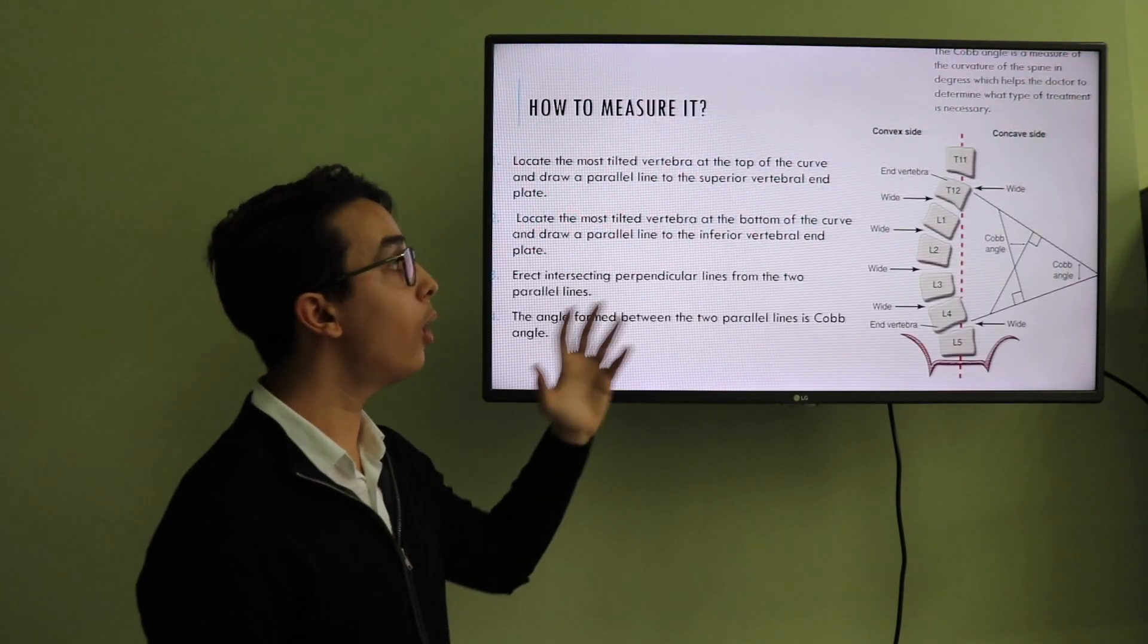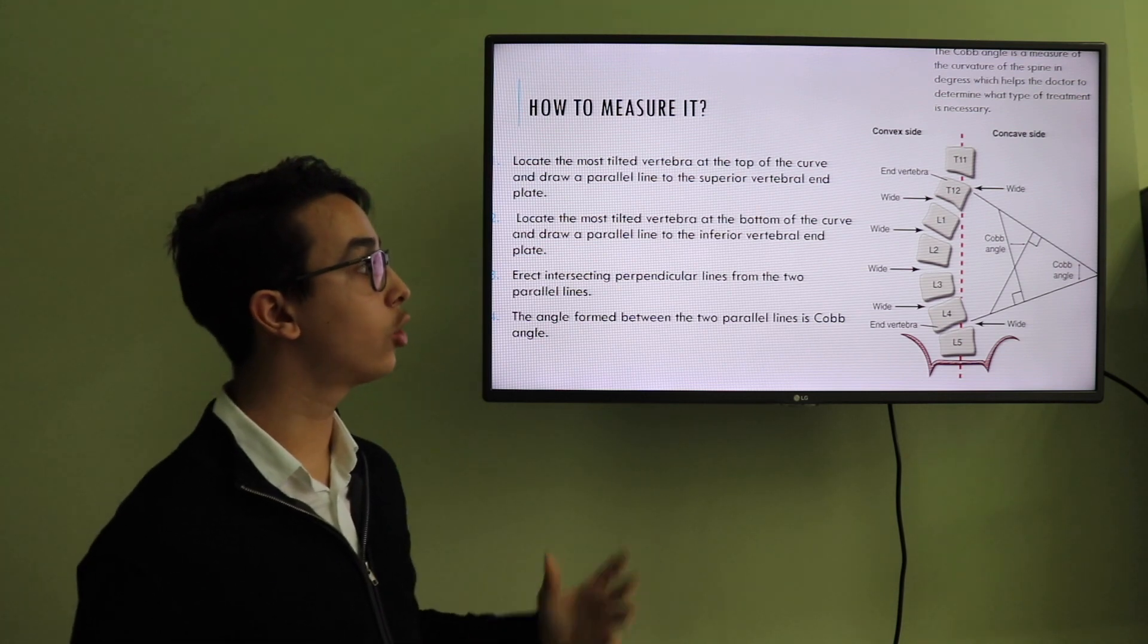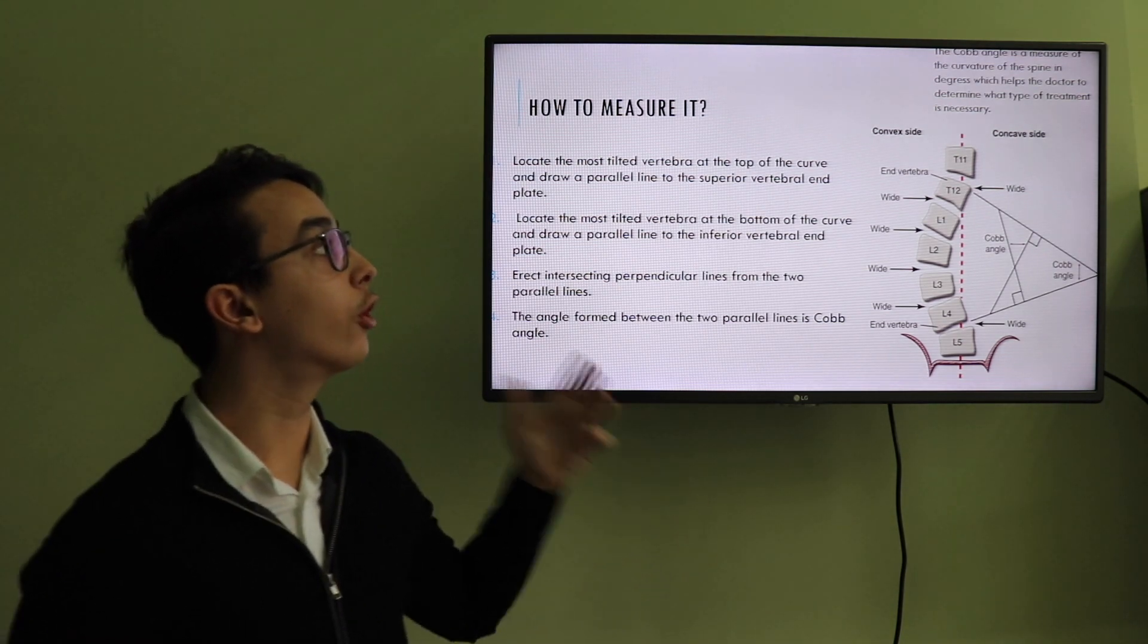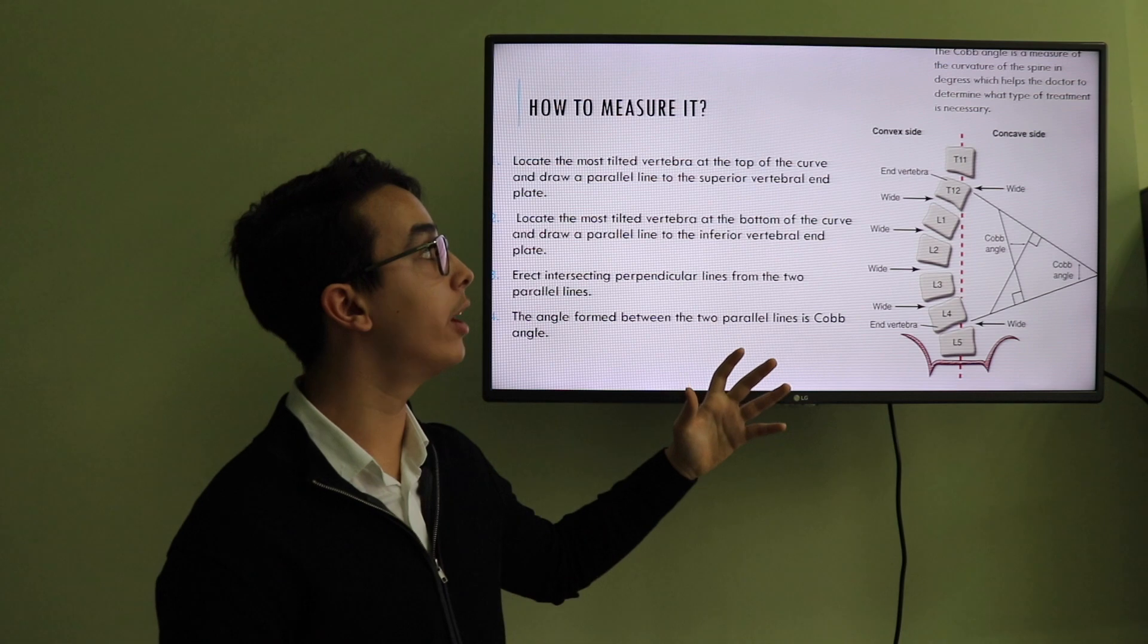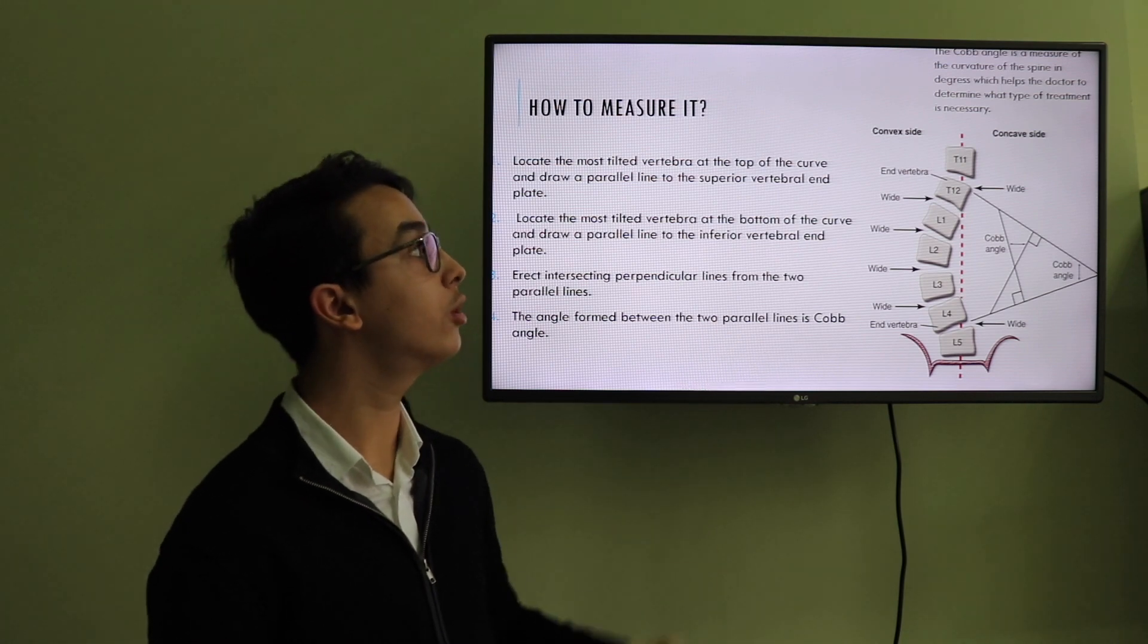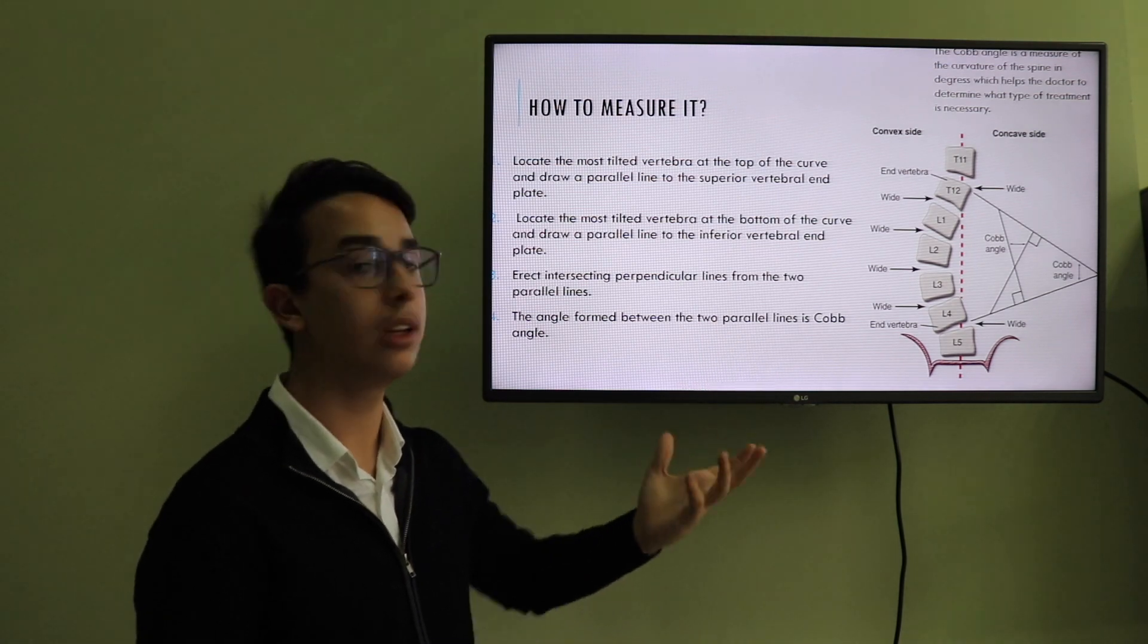Cobb's angle. How to measure it and what does the Cobb's angle help us about? The Cobb's angle is a measure of the curvature of the spine in degrees, which helps the doctor to determine what type of treatment is necessary.